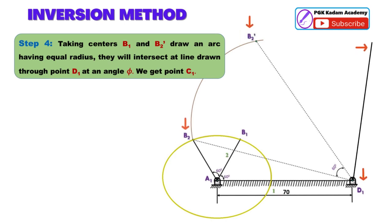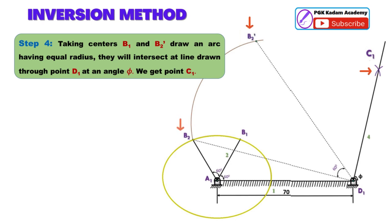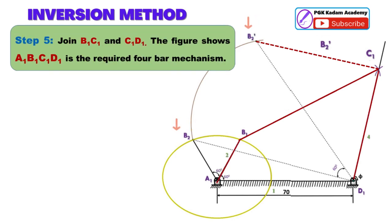They will intersect on the line drawn through point D1 at an angle phi equal to 45 degrees. At the intersection of two arcs we get point C1. Step 5: Join B1C1 and C1D1.